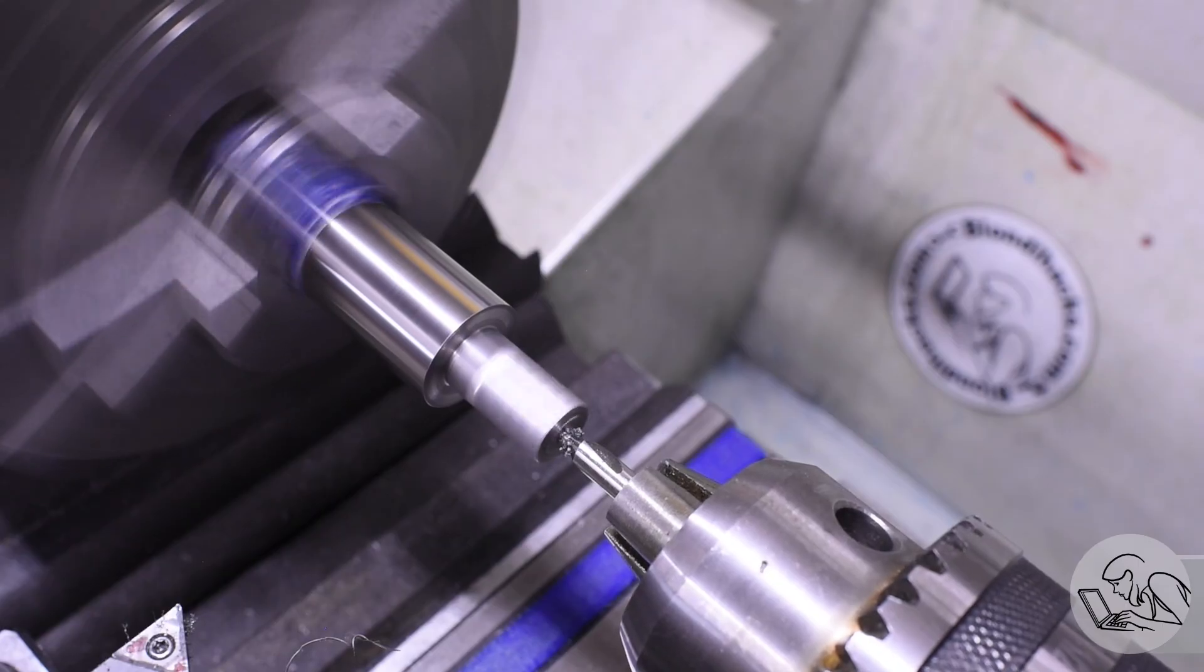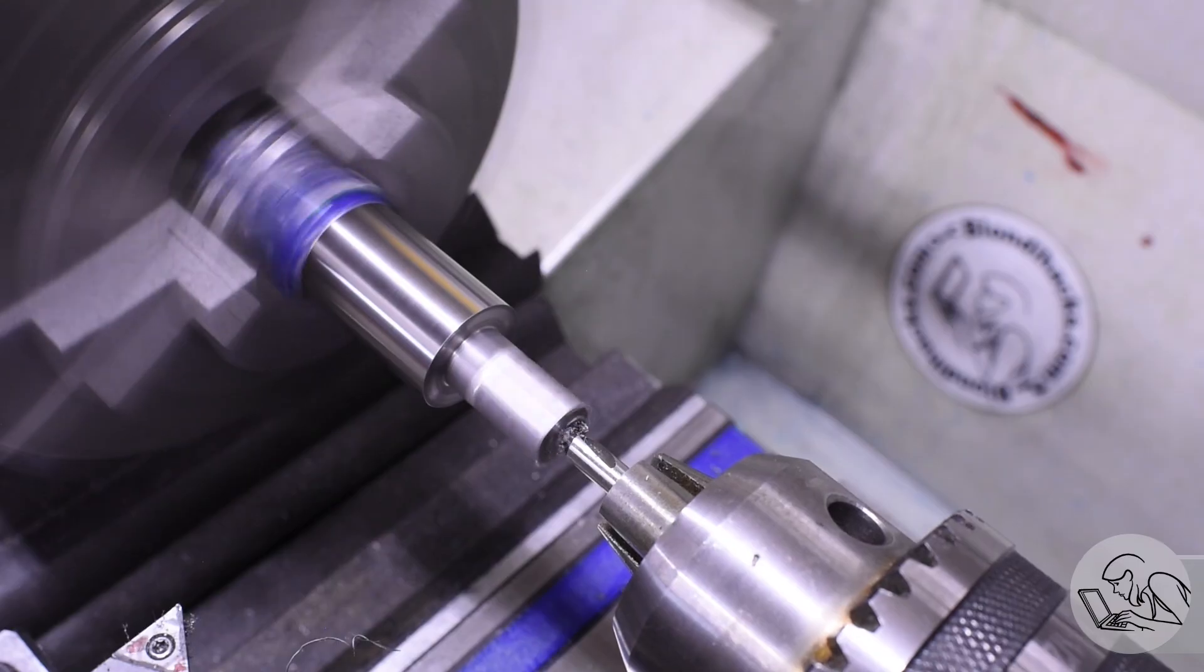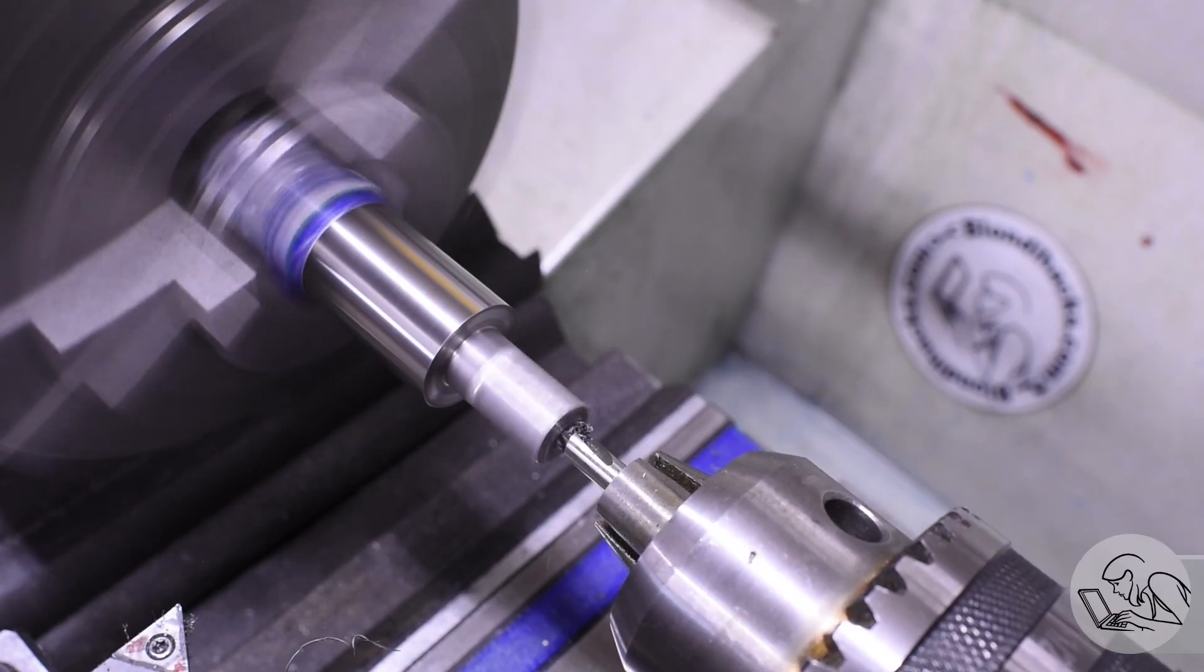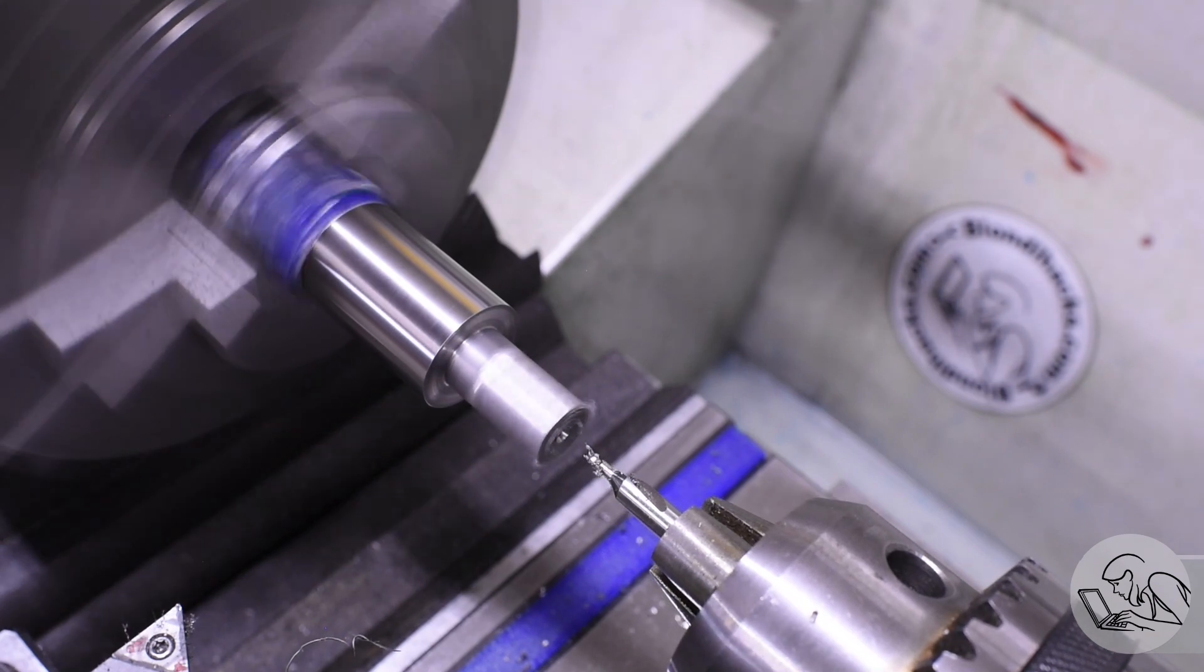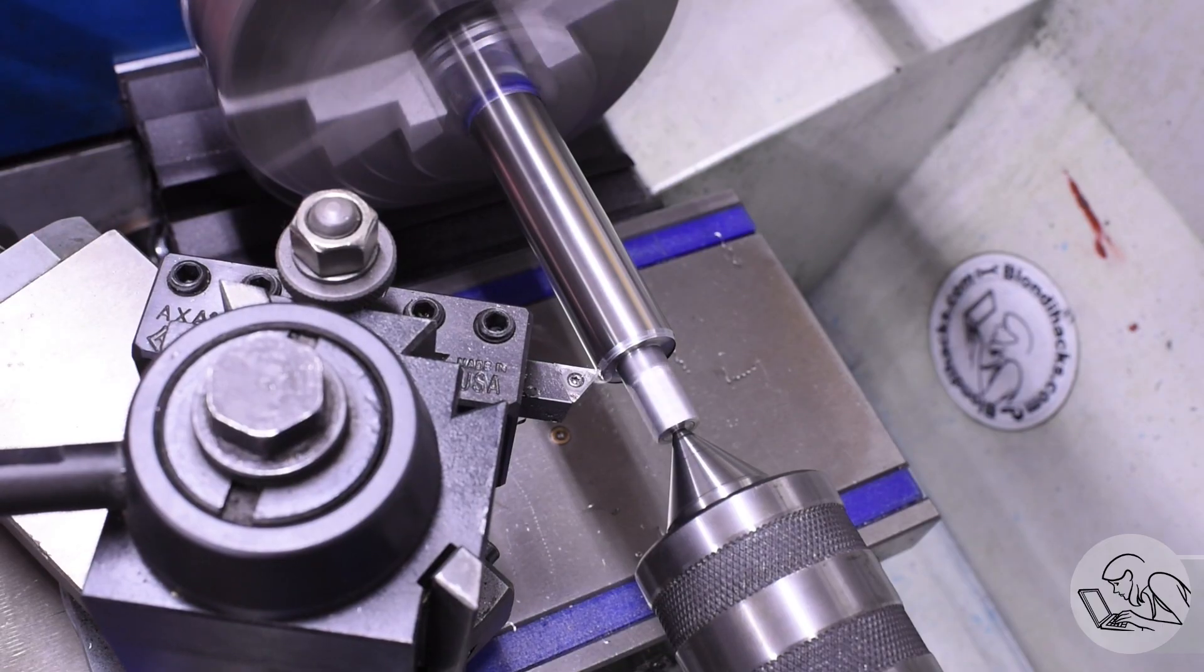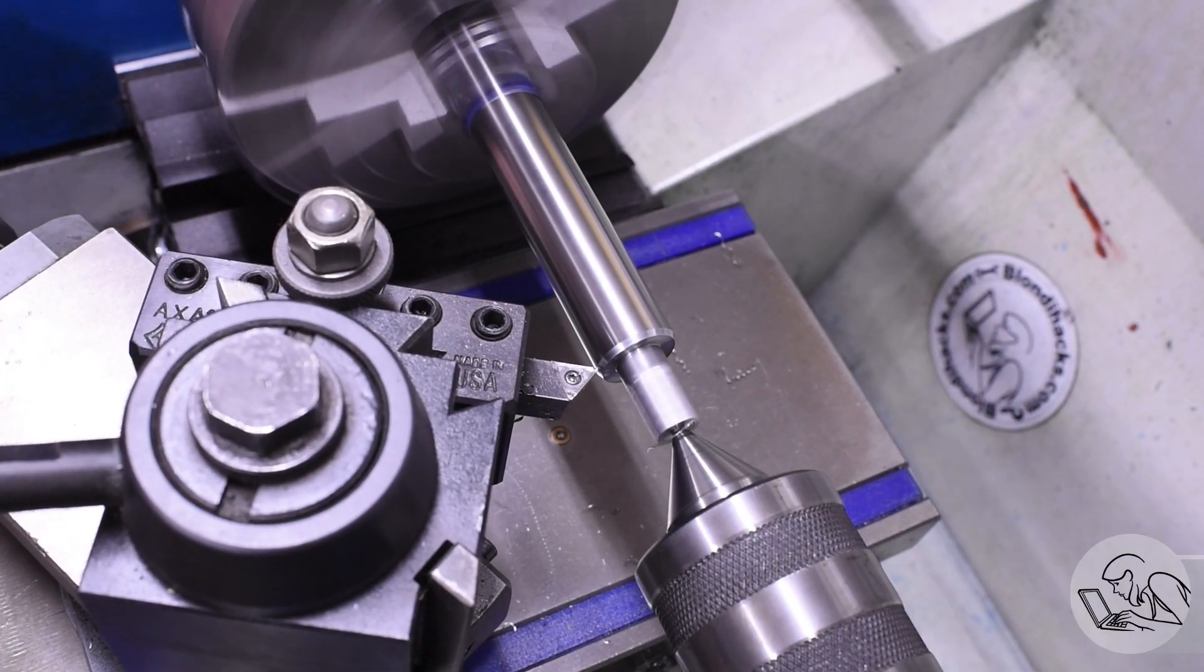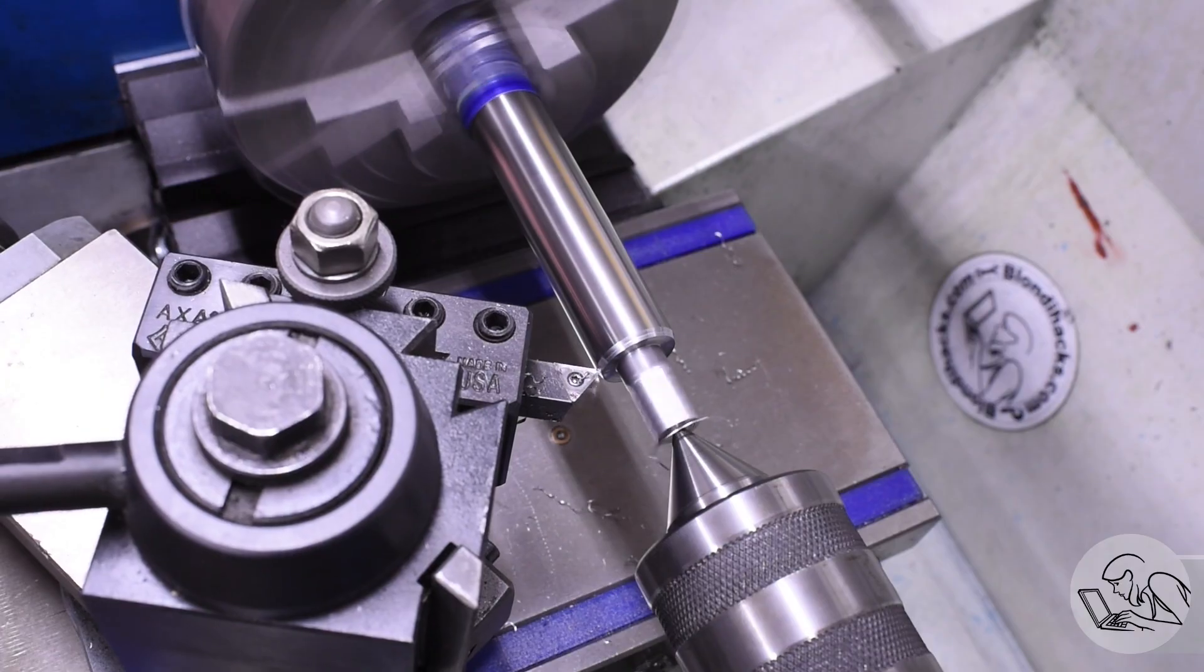I'm putting a center in this now for tail support for the taper turning, but again, that was an order of operations decision. Depending on your requirements, it might have made more sense to do that center earlier. The stock's position in the three-jaw while I was cutting that center was an order of operations decision because I decided that concentricity was less important here than rigidity, and I didn't want to have to set up the steady rest in order to get both.